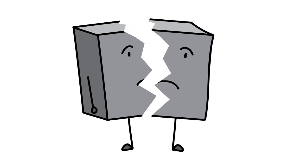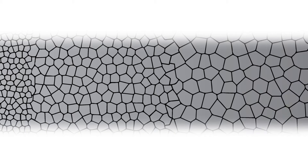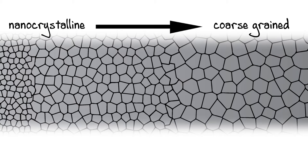However, these nanocrystalline metals are very brittle and prone to catastrophic failure. Creating a gradient in grain size distribution, varying from nanocrystalline at the surface to coarse-grained in the interior, can potentially improve the ductility of nanocrystalline metals.